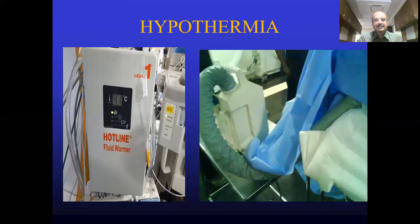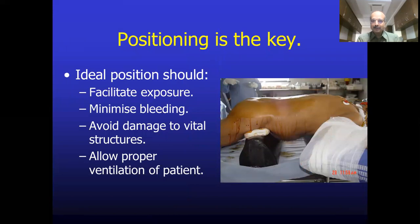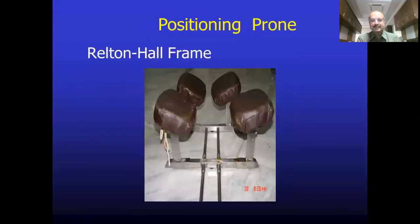It is a prolonged duration surgery and it is important to prevent hypothermia. We do two things: use an in-line fluid warming device so all administered fluids are warmed, and use a body warmer with a Bair Hugger blanket. Hypothermia, if not treated, can result in coagulopathy and increased intraoperative bleeding. So hypothermia management is extremely essential. For positioning, all scoliosis surgeries are done in prone using a Relton Hall frame and bolsters.